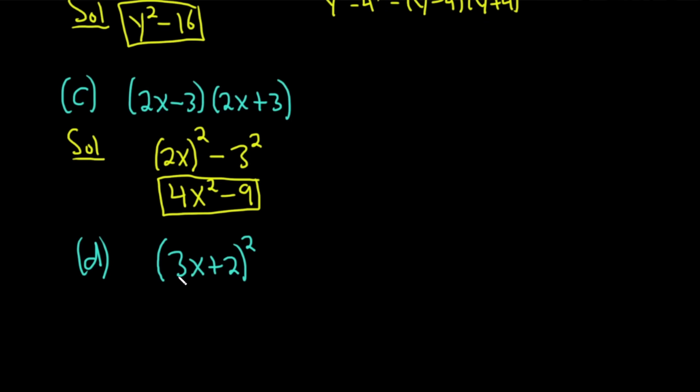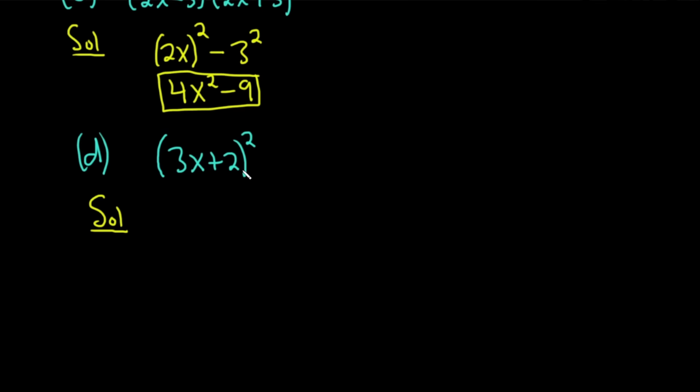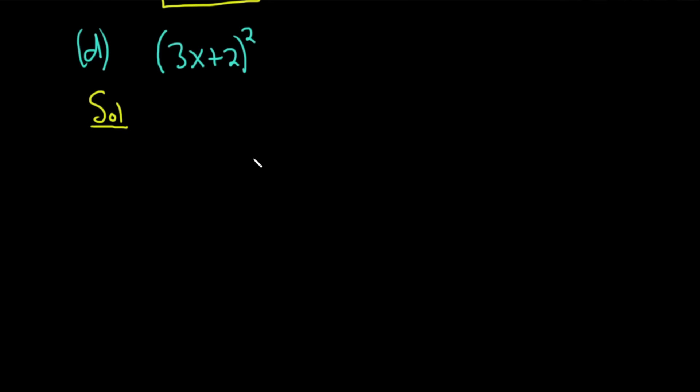Part D, this time we have 3x plus 2. And the entire thing is being squared. Solution. So this one is going to use a very, very powerful special product that takes a little bit more effort to learn, but it's worth it. So the formula is the following. It's parentheses a plus b squared. And this is equal to a squared plus 2ab plus b squared.